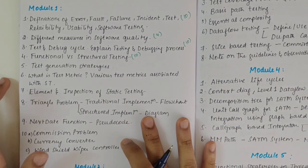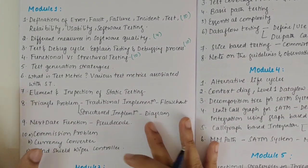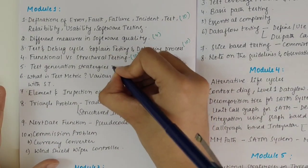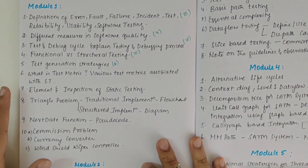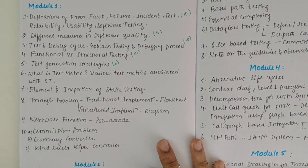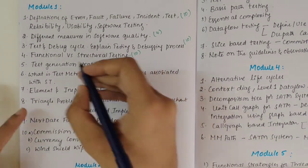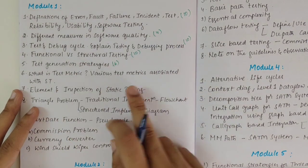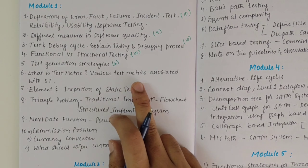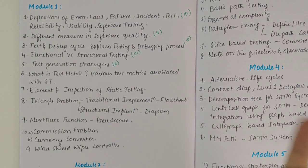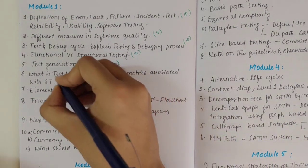Then we have test generation strategies, which could be asked for six marks. Then we have what is a test metric and what are the various test metrics associated with software testing. There are four to five test matrices, but here we need to explain two or three.